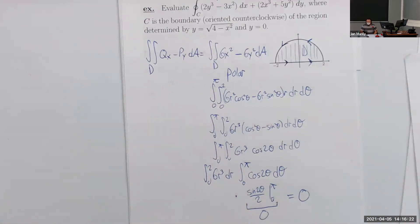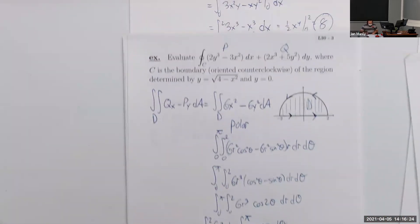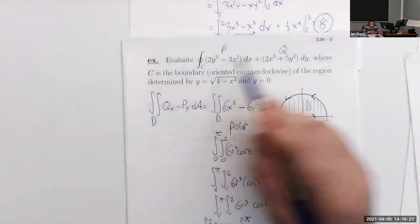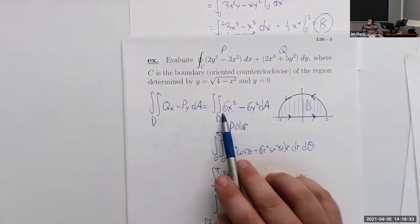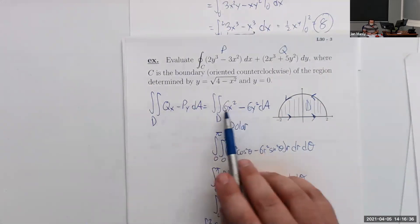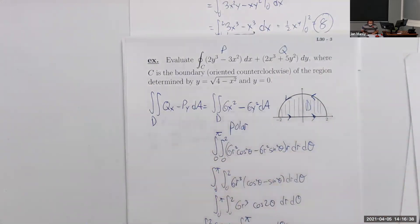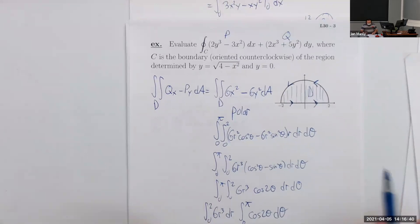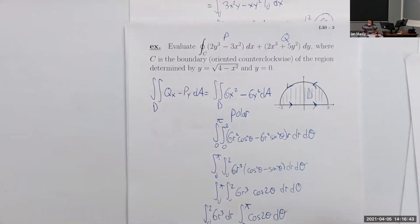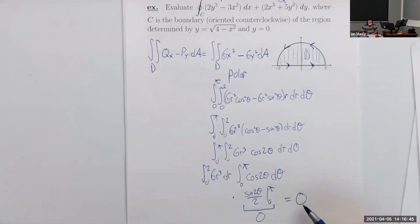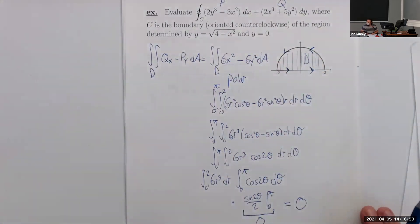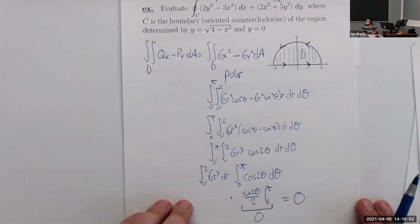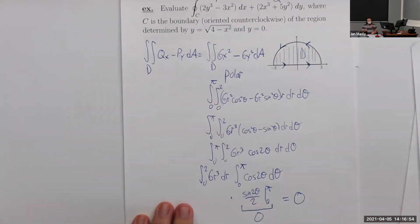Is this a conservative vector field? It's not. For a conservative field, cross partials would be equal and the result would be zero immediately. This shows that just because a closed curve integral gives zero doesn't necessarily mean the vector field is conservative — the reasoning doesn't go the other direction.